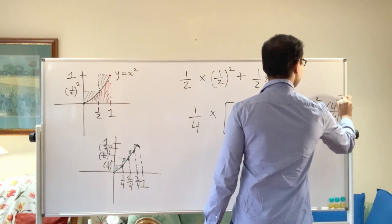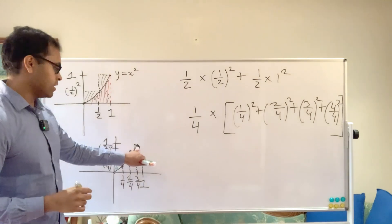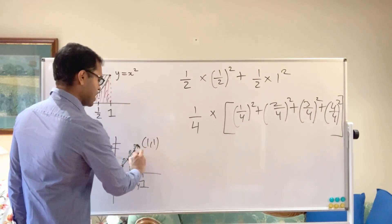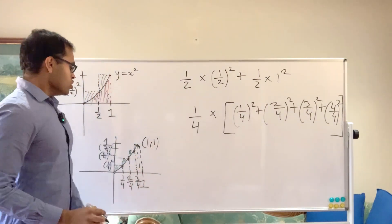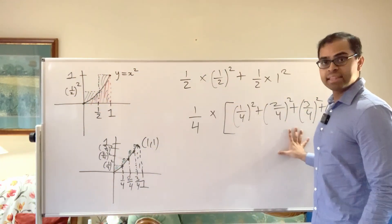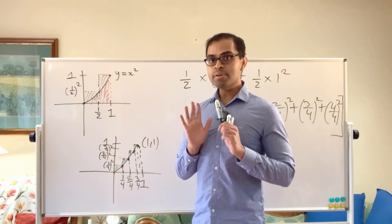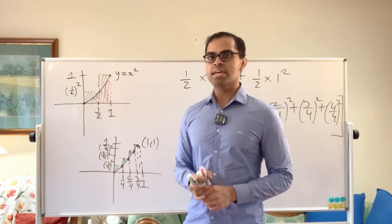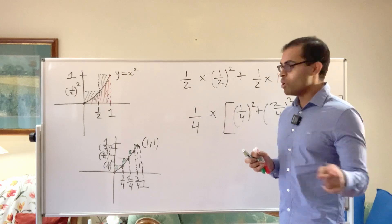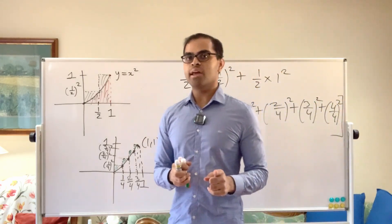We get one-fourth times the quantity one-fourth squared plus two-fourths squared plus three-fourths squared plus four-fourths squared. The four-fourths squared is a rectangle of height one — the last rectangle going up to the point (1, 1) at the end of the parabola. This sum is the approximation to the area under the graph of the parabola. It's a better approximation — a smaller number, closer to the actual area.